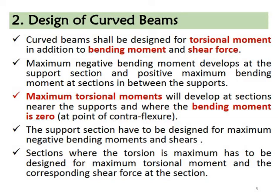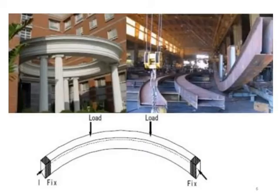If you want to see the torsion at the maximum torsion point, you can see the transmission of the bending moment is zero. The maximum torsion moment is at the contraflexure point. The support section has to be designed for maximum negative bending moment and shear force. The torsion section is to be designed for maximum torque and the corresponding shear force.